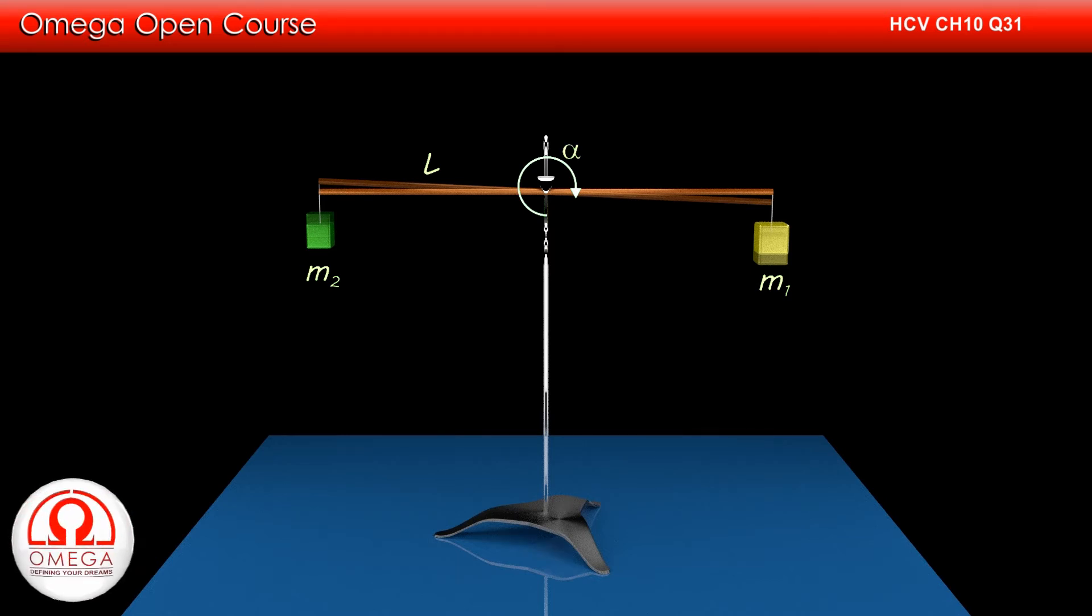As the endpoints of rod are at distance of l by 2 from the pivot, when the rod accelerates with angular acceleration alpha, these points will move with linear acceleration of alpha times l by 2. This means m1 will accelerate down with acceleration of alpha l by 2, while m2 will move upward with the same acceleration.